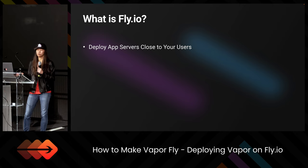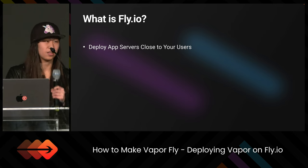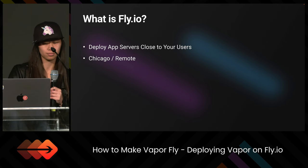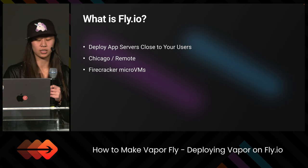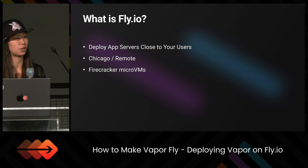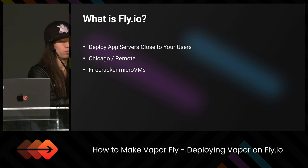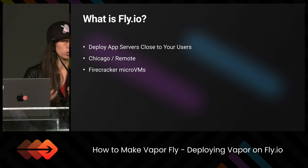So first off, what is Fly? It describes itself as 'deploy app servers close to your users.' They are a company headquartered in Chicago, but most of their team is fully remote. They use a service called Firecracker Micro VMs. Firecracker is software developed by AWS — it's open source virtualization software that creates and manages micro VMs. A micro VM is more lightweight than a normal VM, with faster startup times and lower overhead.